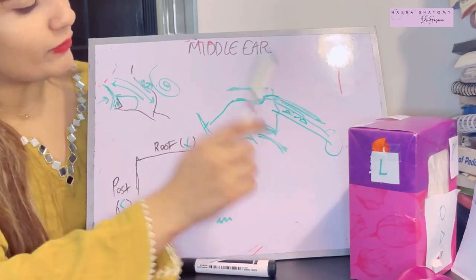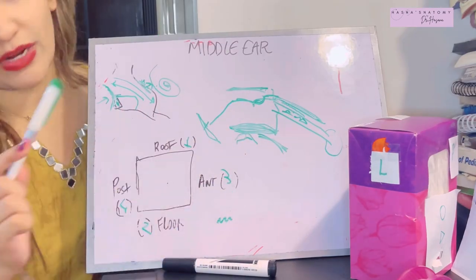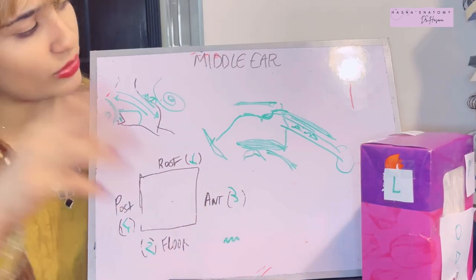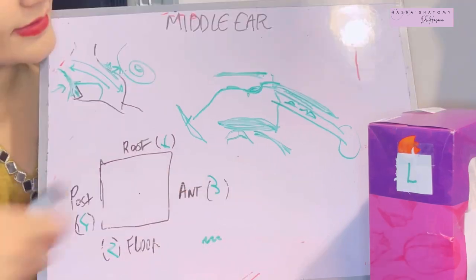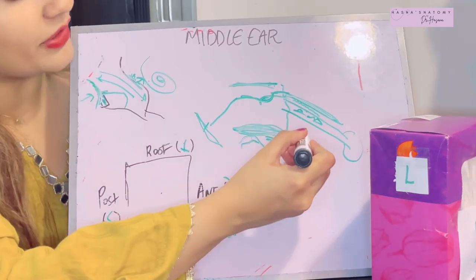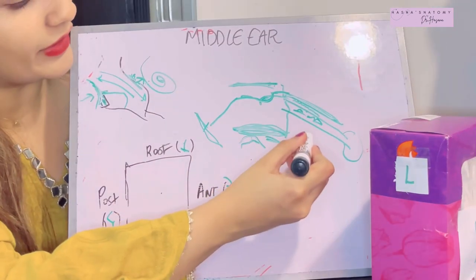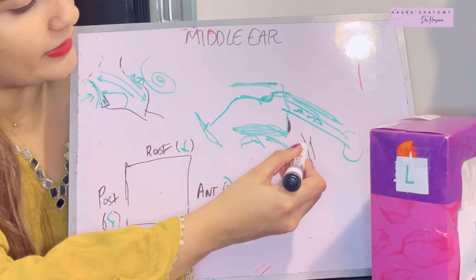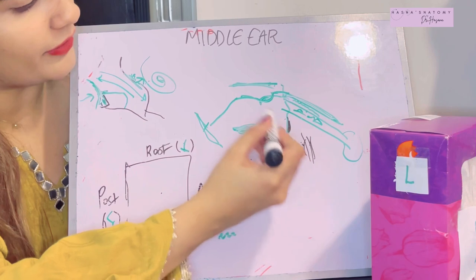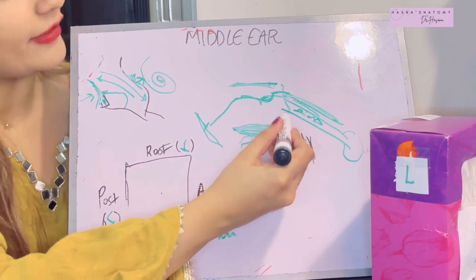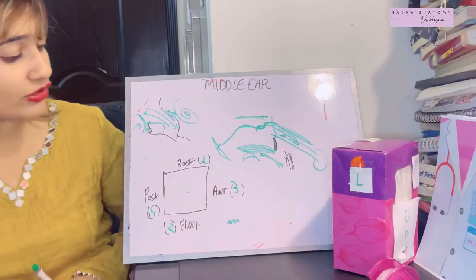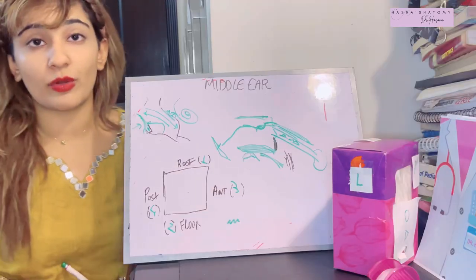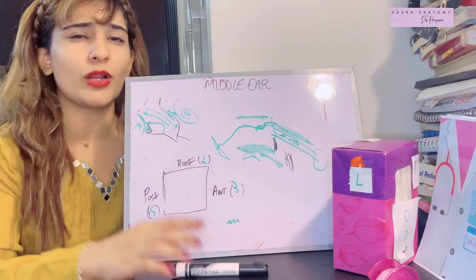The third content of the anterior wall is the internal carotid artery. A thin plate of bone separates the internal carotid artery from the middle ear cavity.